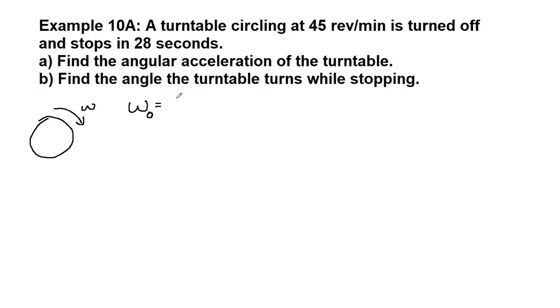The initial angular velocity is 45 revolutions per minute. As we started to practice back in Chapter 6, as soon as we see these revolution per minute units, we want to make sure we remember that omega, the angular velocity, should be in radians per second. So 1 revolution is 2π radians, and minute on the bottom means 1 minute on top divided by 60 seconds. We complete that, we put it into our calculator, and we get 4.71 radians per second for our initial angular velocity.